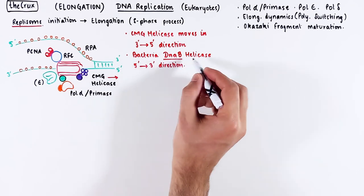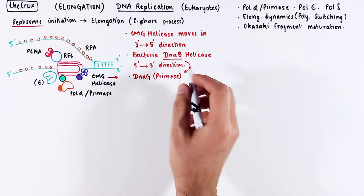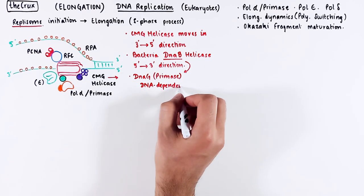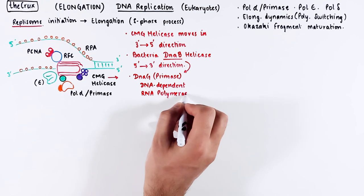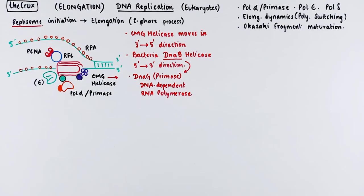But more interestingly, the helicase in prokaryotes has a DNAG primase, which makes the RNA primer. If you want details on prokaryotic helicase and primase, I have a separate video that you can check. Links are in the description down below.